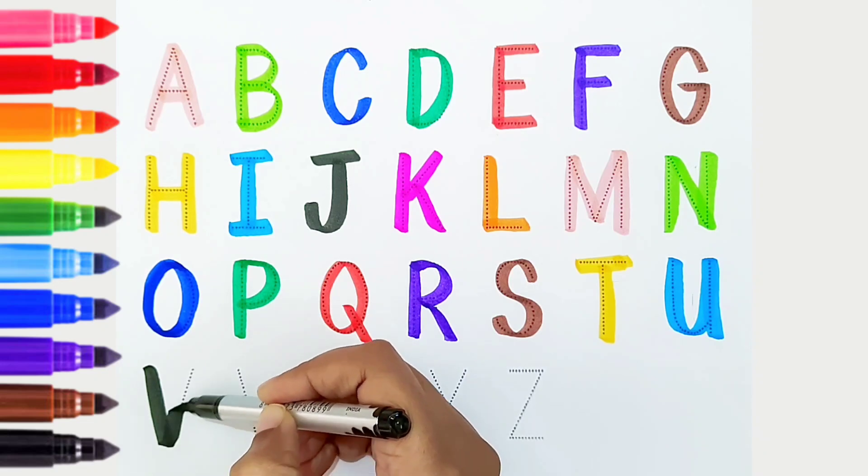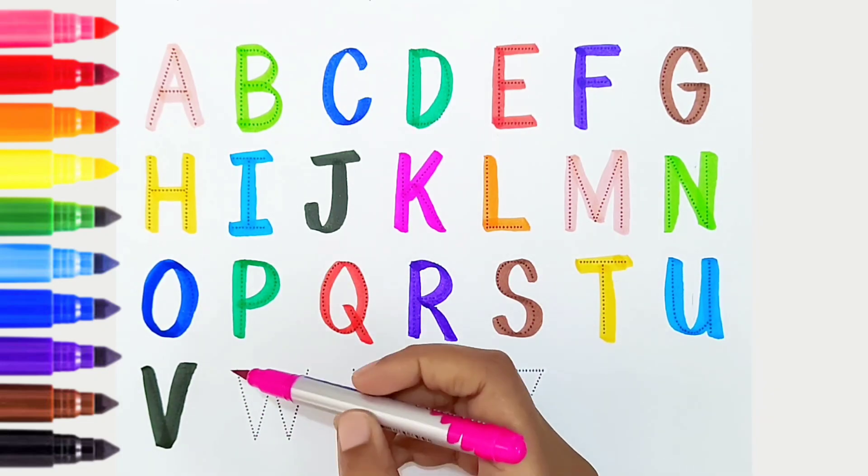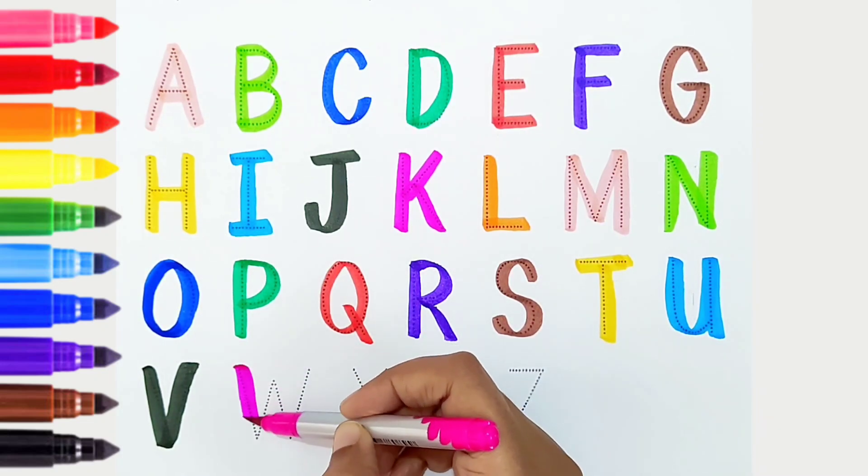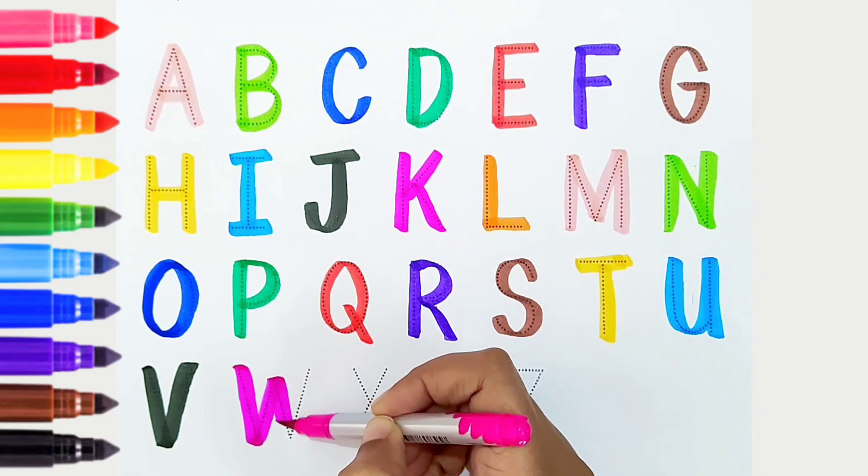V, black color. V is for van. W, dark pink color. W is for watermelon.